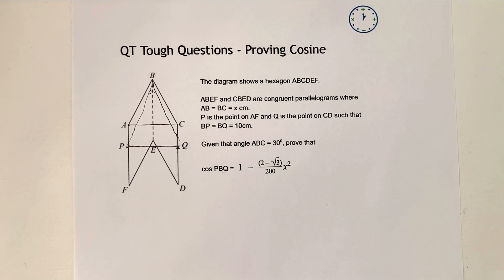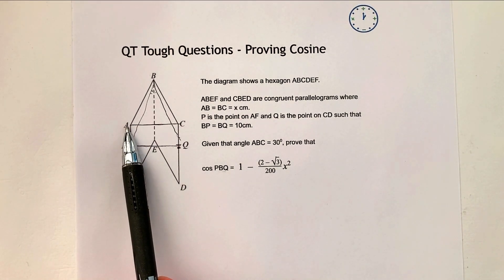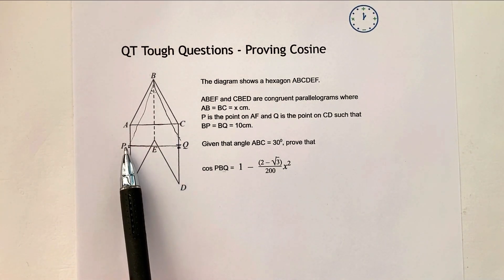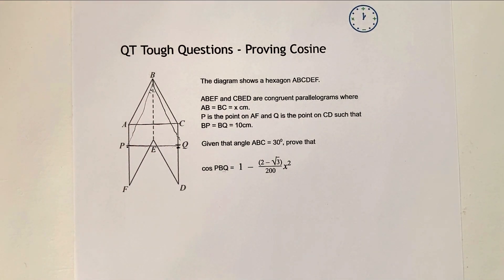But I also need to recognize that actually the distance between A and C here is also the same as the distance between P and Q. They're both equivalent to each other. So actually, it gives me a little bit of a way of working this out.